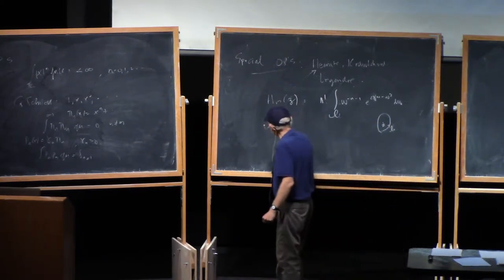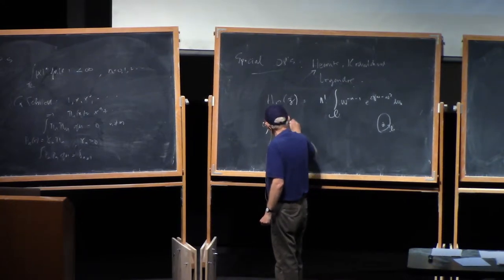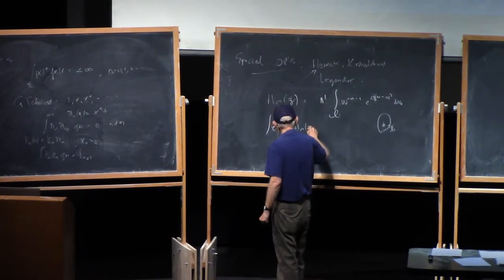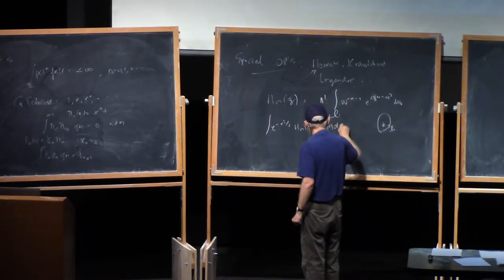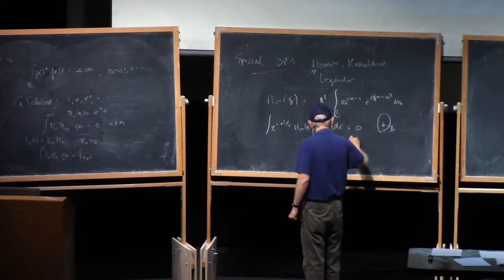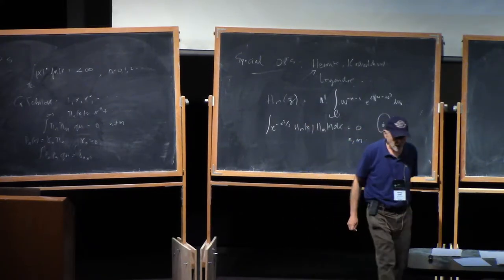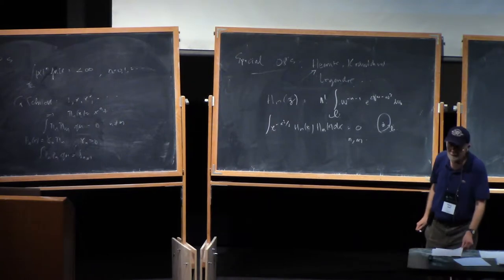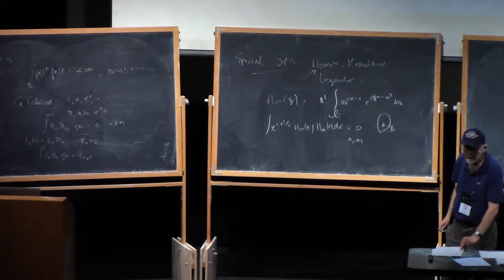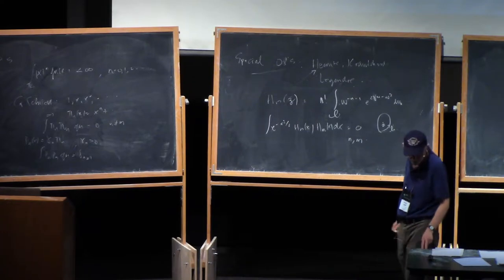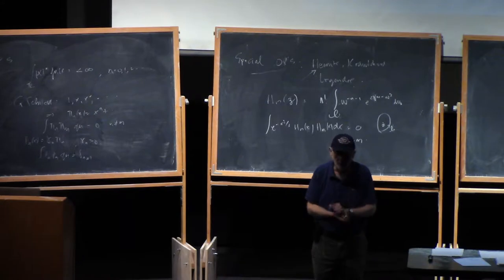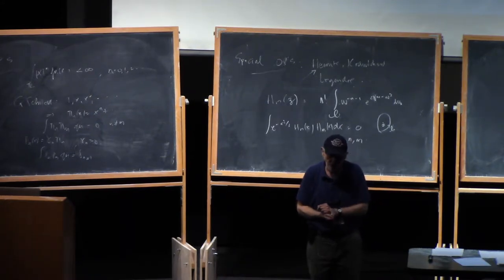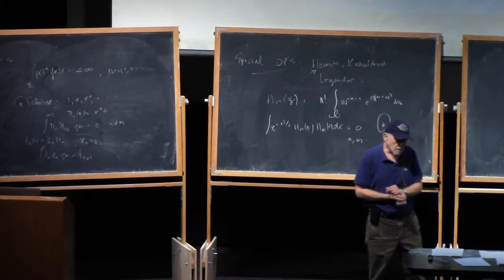These polynomials are orthogonal H_n of x, n not equal to m, and they arise, as we know, in analyzing the Gaussian ensemble. In fact, the first proof of the computation of the sine kernel, for example, the gap probability was obtained by using the asymptotics of the polynomials.